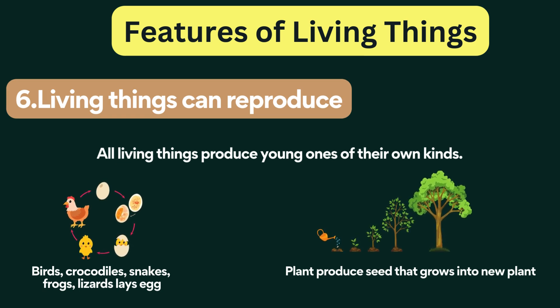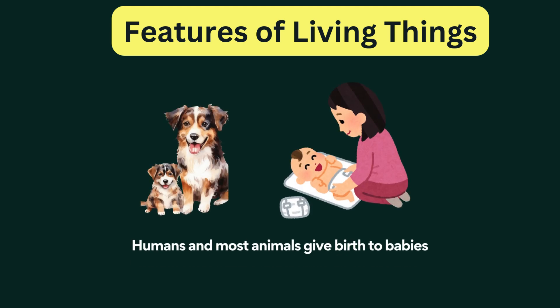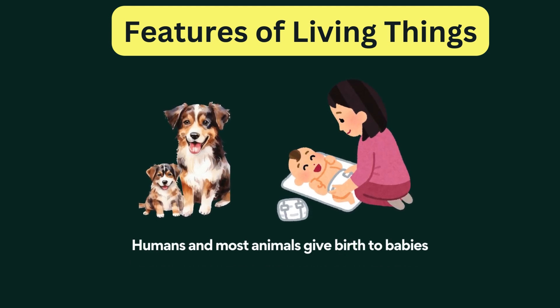Living things can reproduce. All living things produce young ones of their own kind. Birds, crocodiles, snakes, frogs, and lizards lay eggs. Most plants produce seeds that grow into new plants. Some plants produce new plants from their stems, roots, and leaves. Humans and most animals give birth to babies.